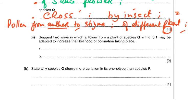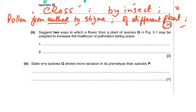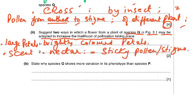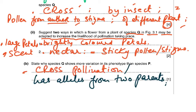Part two: suggest two ways a flower from species Q may be adapted to increase the likelihood of pollination. You could write: large petals, brightly colored petals, scent, nectar, sticky pollen, or sticky stigma. The reason cross pollination is advantageous is that it produces alleles from two parents — so use the word alleles in these questions.